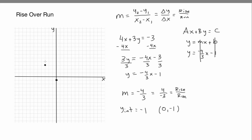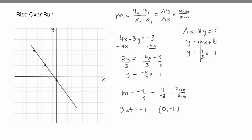From this point, rise 4 — 1, 2, 3, 4 — and run 3 to the left — 1, 2, 3. I draw a line, my best straight line. It's close enough. You can see I now have a line, and I'm finished — this is the end product.